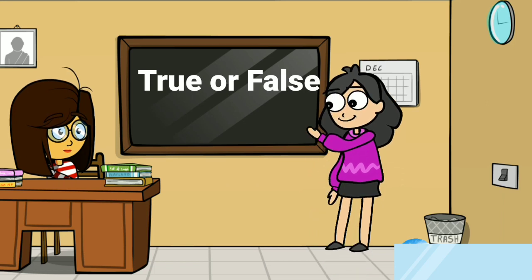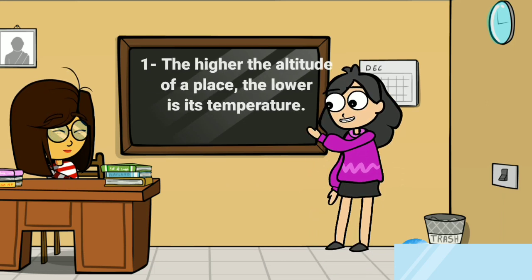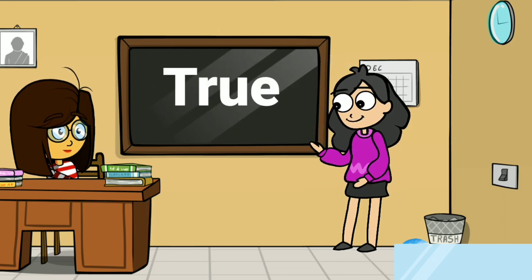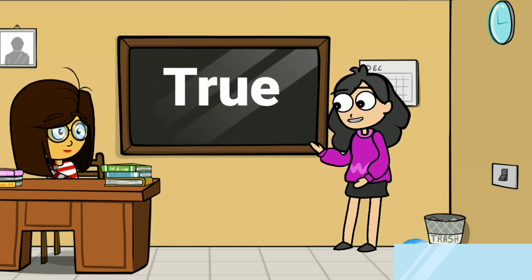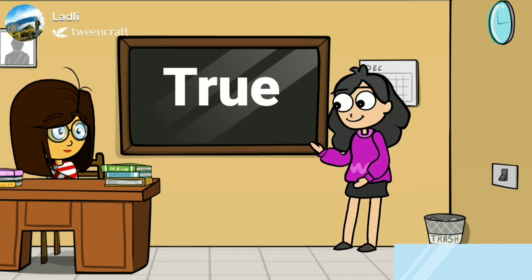The first true or false question: the higher the altitude of a place, the lower is its temperature. The answer is true, as we go high up on the mountains the temperature decreases. So the answer is true.